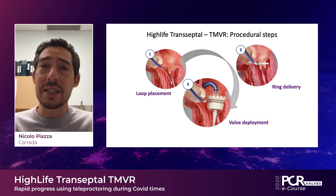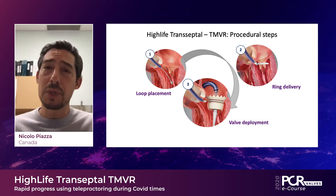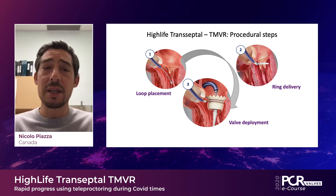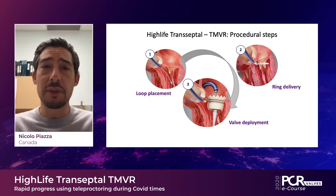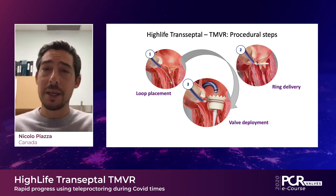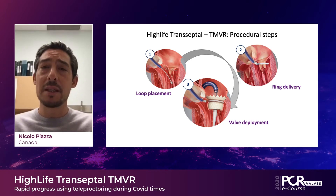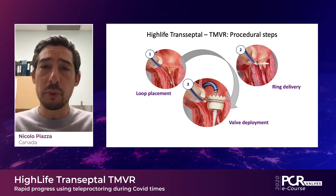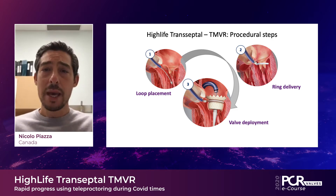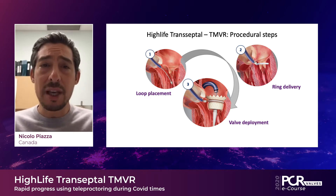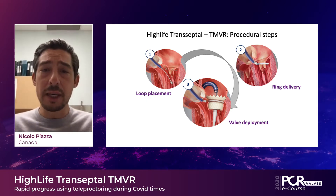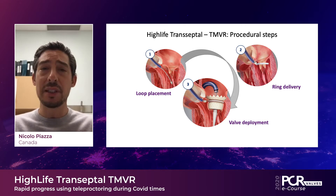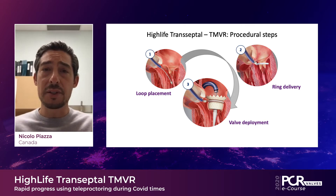The HiLife transeptal transcatheter mitral valve replacement procedure is composed of three steps. The first is to place a loop around the mitral valve leaflets using a retrograde aortic approach. The second step is to place a ring over the looped wire. And the third step is basically a valve in a ring — we use a transeptal approach to deliver our valve across the ring.